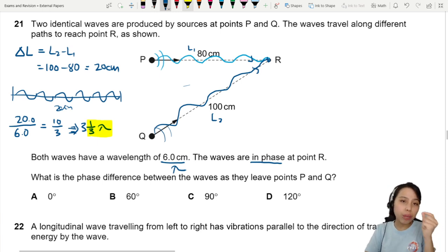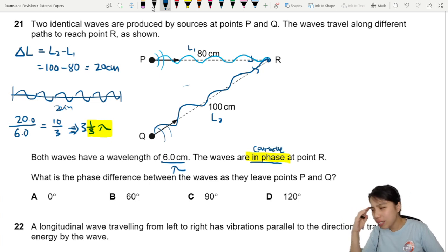But in this case, it's special because they purposely mentioned that when they reach at R, they are in phase, means they are constructive. So that's so weird. It's 1 over 3 lambda. How are they constructive?